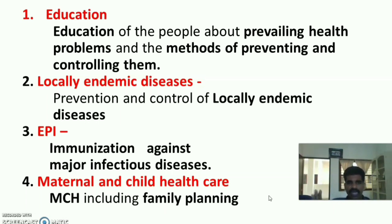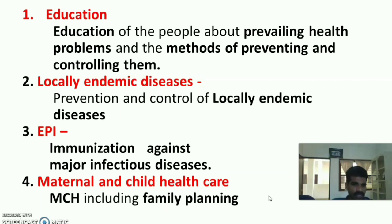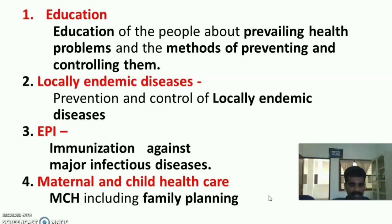L stands for locally endemic diseases. Locally endemic diseases means a disease present in a specific locality, which varies from community to community. The element here is the prevention and control of locally endemic diseases — that is the second element.